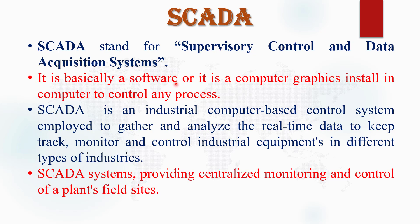SCADA is basically a software, whereas PLC is basically a hardware — it is a computer graphic installed in our PC to control any process. With the help of SCADA system we remotely assist or control any manufacturing or production plant. SCADA is an industrial computer-based control system used to gather and analyze real-time data to monitor and control industrial equipment in different types of industries. SCADA provides a centralized monitoring and controlling system.